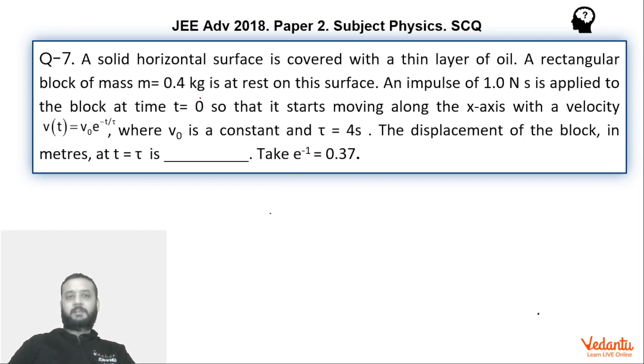Now the question is fairly simple. There is a block which is at rest initially. The mass of the block is 0.4. The impulse of one Newton-second gives the velocity to the block at time zero and it starts moving along the x-axis.